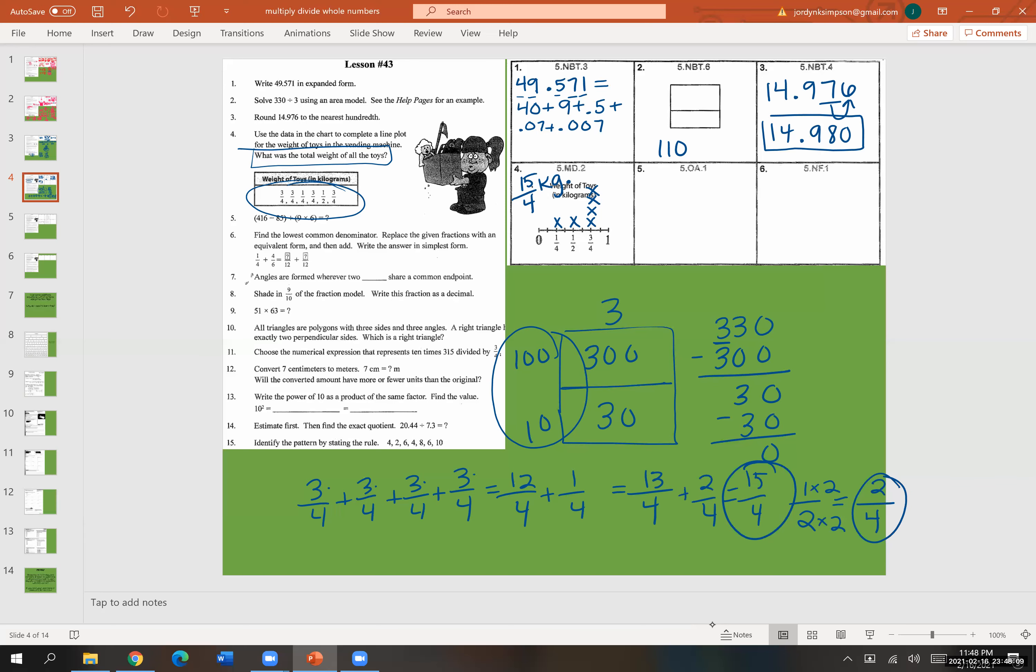All right, so let's go on to number five. We have 416 minus 85 in parentheses plus nine times six in parentheses. This is order of operations, which is PEMDAS. Please excuse my dear Aunt Sally. P is for parentheses. So I do have two sets of parentheses. So we will have to solve each. So the first one is that 416 minus the 85. Six minus five is one. I cannot do one minus eight. So I'll borrow. Turn to 11. Eleven minus eight, so eight, nine, ten, eleven, which is three. And then three.